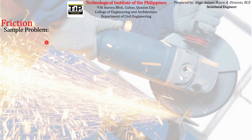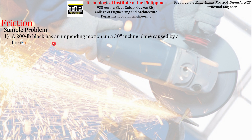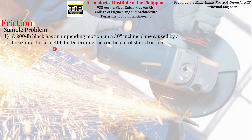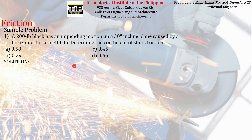Let's try this sample problem. A 200-pound block has an impending motion up a 30-degree inclined plane caused by a horizontal force of 400 pounds. Determine the coefficient of static friction. We have some answer choices, so to answer this problem, we first need to draw the setup described.